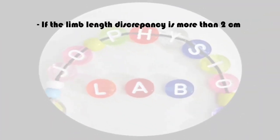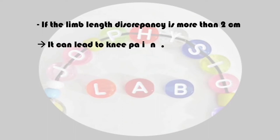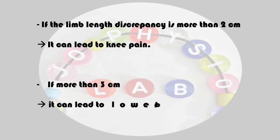If the limb length discrepancy is more than two centimeters, it can lead to knee pain. If the discrepancy is more than three centimeters, it can lead to lower back pain.